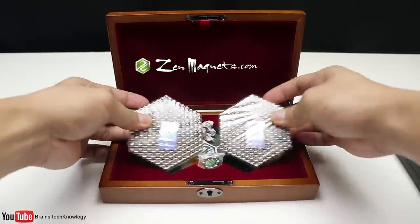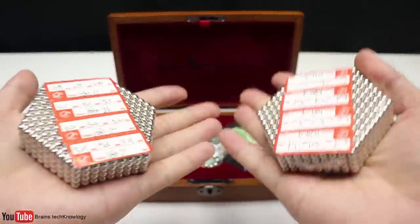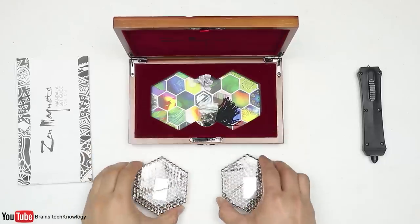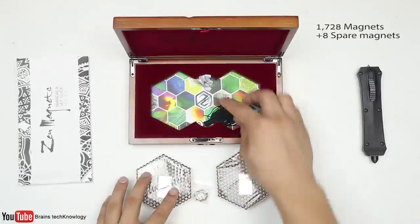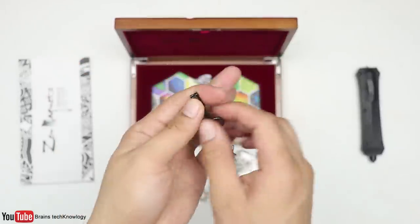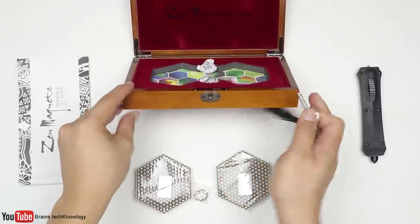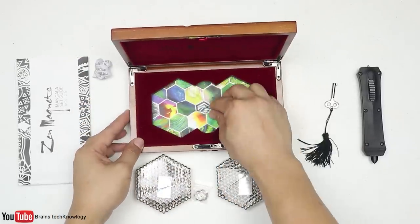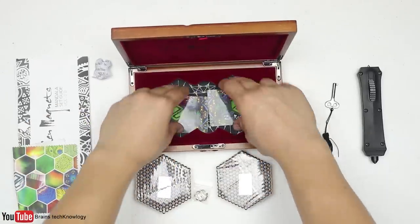From zenmagnets.com and I'm getting excited to build stuff using these magnets. All right so we have eight spears and this is the key for the box. Ah that's pretty cool and we also got a cleaning cloth.